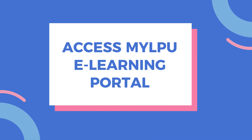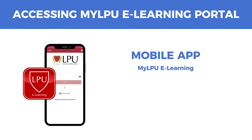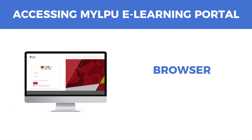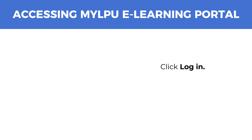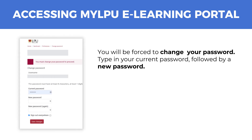Now that you have activated your account, you can access the MyLPU eLearning portal. There are two ways to access your LMS. The MyLPU eLearning mobile application is available on Google Play and App Store. To access your LMS through the browser, go to lpu.mrooms.net. Enter your LMS username and password, then click Login. You will be forced to change your password — type in your current password followed by a new password.